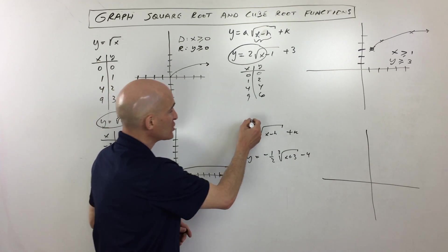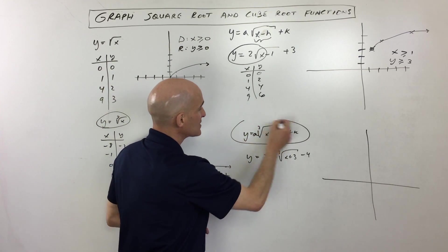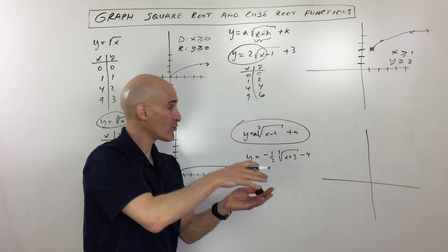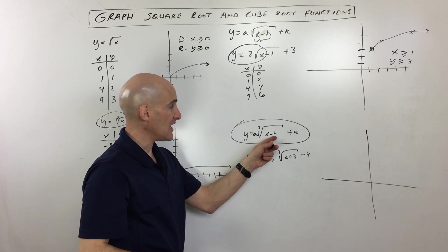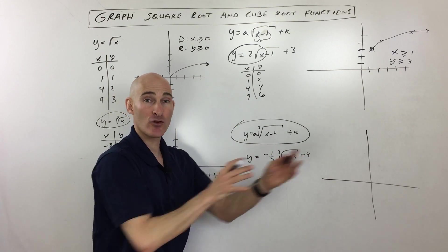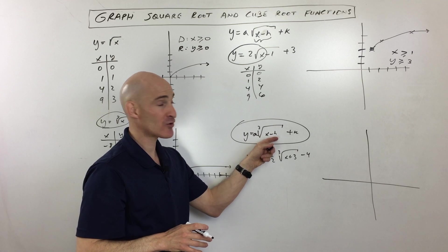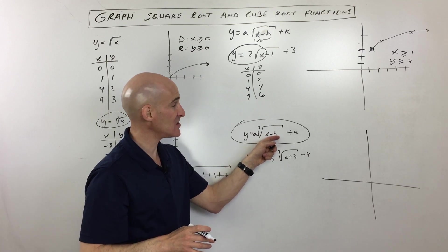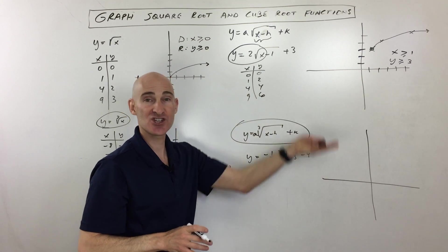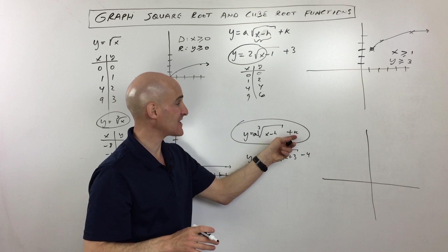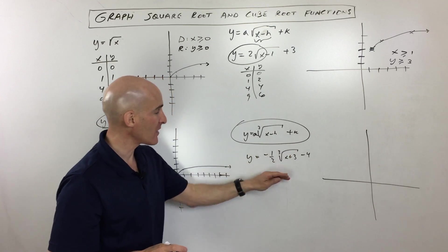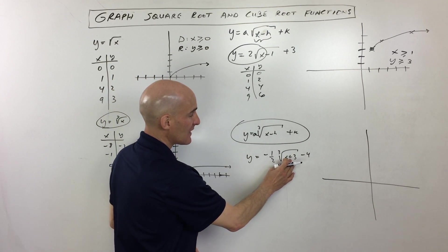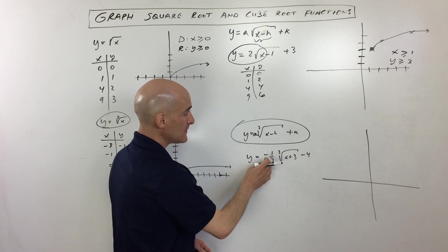If we write this in a more general way, we have: y equals a times cube root of x minus h, plus k. The a is the vertical stretch or compress. The h shifts it left or right — remember, it has the opposite effect from the sign you see. The k is the vertical translation up and down, and this one has the same effect. Looking at this equation, we're going to be shifting left three and down four.